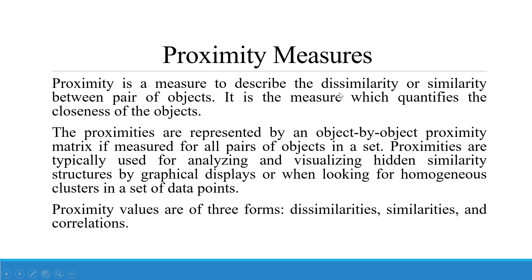Proximity is a measure to describe the dissimilarity or similarity between pairs of objects — it quantifies the closeness of objects. Proximities are represented by an object-by-object proximity matrix when measured for all pairs of objects in a set. They are typically used for analyzing and visualizing hidden similarity structures through graphical displays, or when looking for homogeneous clusters in a set of data points. Proximity values are of three forms: dissimilarities, similarities, and correlations.